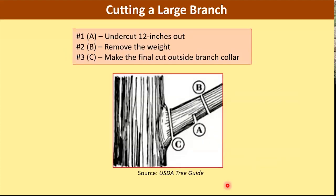If we're cutting a large branch, the steps are: number one, make an undercut roughly 6 to 12 inches away from the joint; number two, cut through the rest of the branch to remove the weight; and number three, remove the stub.